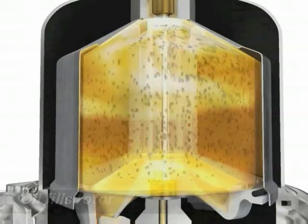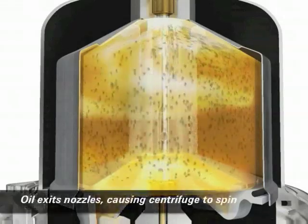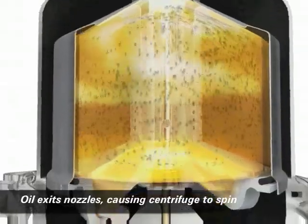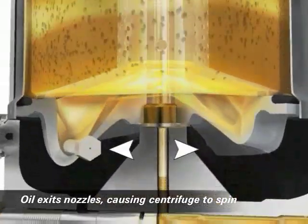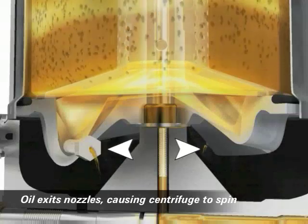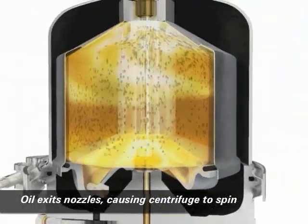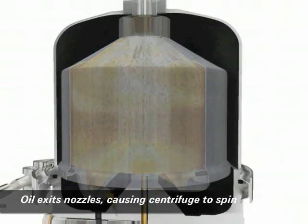Once fully pressurized, oil exits the rotor through opposing jet nozzles located at the bottom of the turbine. This causes the turbine assembly to rotate.